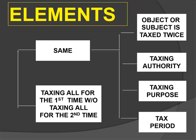Both elements must concur. Absent one of the elements, then there is only indirect duplicate taxation, which does not violate the Equal Protection Clause and therefore could not nullify a tax measure.